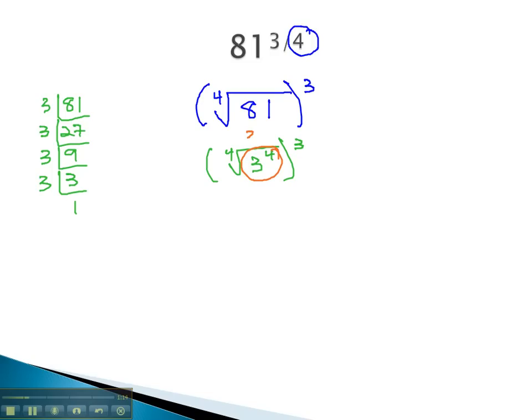3 to the fourth power under the fourth root, dividing the exponent by the index, gives us simply 3. Now that we've simplified the radical, we simply have to cube our final result. 3 to the third power is 27. This means 81 to the 3 fourths power is equal to 27.